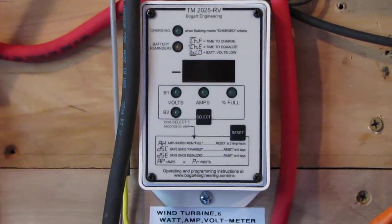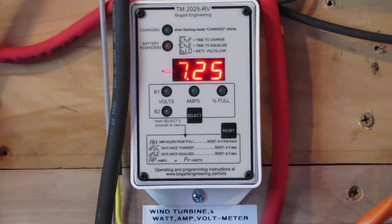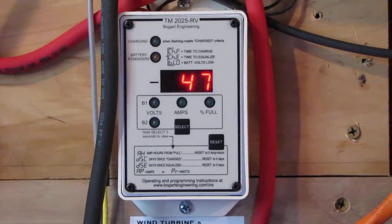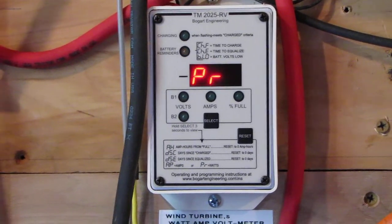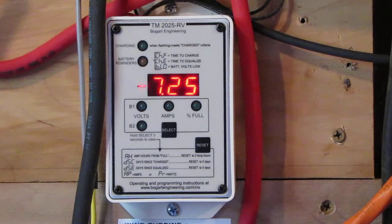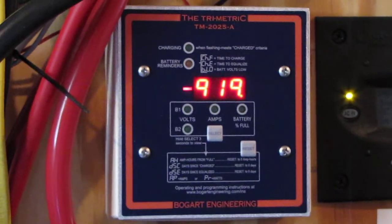I got it from Alt E Store, Alternative Energy Store, and you can find them on link on my web page. And here's my other Bogart Tri-metric where I've got a few minutes that's showing our solar watts we're putting out right now.